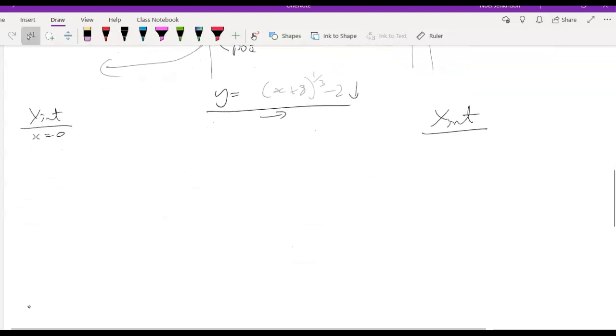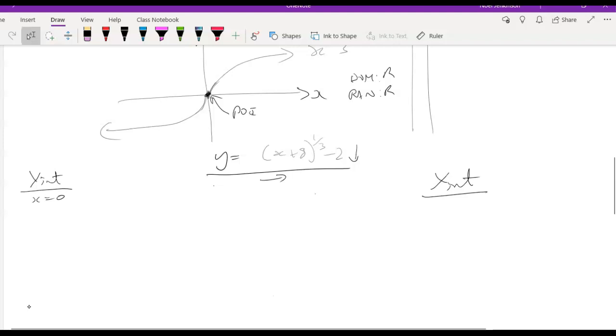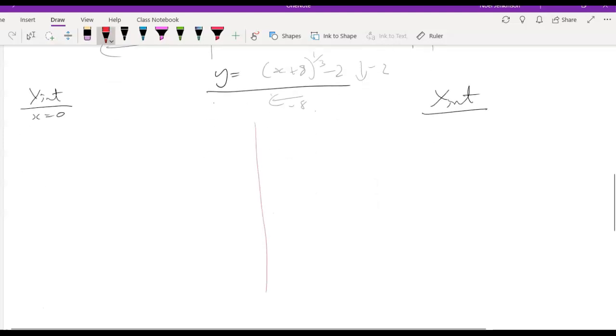Here's an example, x plus 8 to the power of a third minus 2. Well, we're going to translate that graph, the x to the third graph, exactly the same way. This will translate, let me just work out those translations. Translation backwards 8, it will translate down 2. If I was to then draw that backwards 8 down 2, I might come back down to there and say that that was backwards 8 and down 2. There's the point of inflection. Remember the graph is going somehow like that and somehow like that. So I need to now find x and y intercepts.